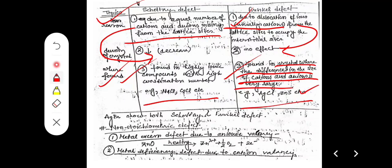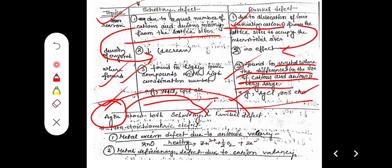In both AgCl and ZnS, the size difference between cations and anions is huge. However, there is an exception: AgBr undergoes both Frenkel defect and Schottky defect.